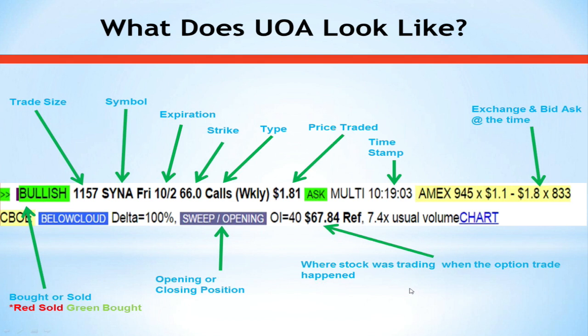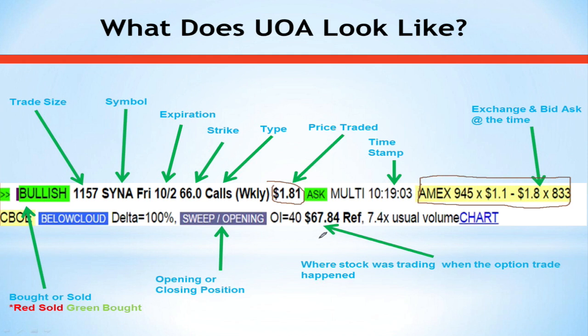All of this information might seem like a lot, but I can see some very important things right away. This trader paid $1.81 for this trade at a time when the market was $1.10 bid at $1.80. That tells me right away they paid through the offer — the market maker's best offer was $1.80, and this trader said 'I want to get this 1,157-lot of calls so badly that I'm going to pay more than what the market maker is offering.' That tells me this was an aggressive buyer — they were very aggressively trying to buy these options.